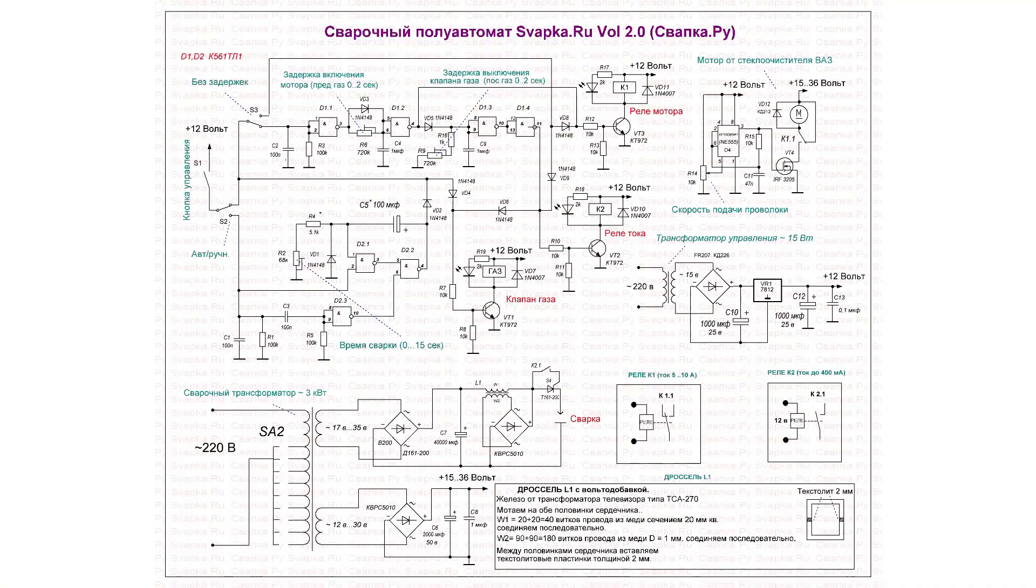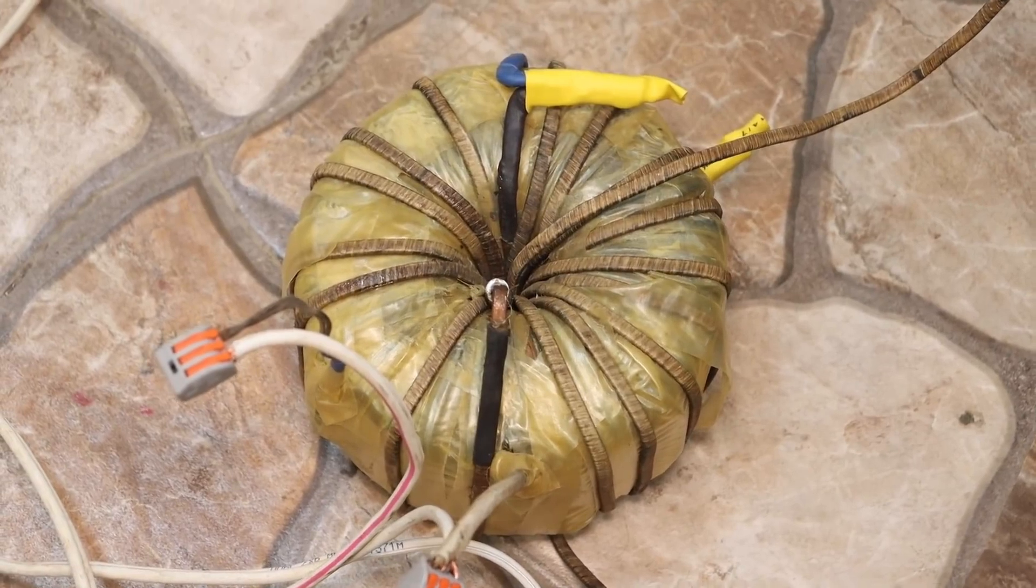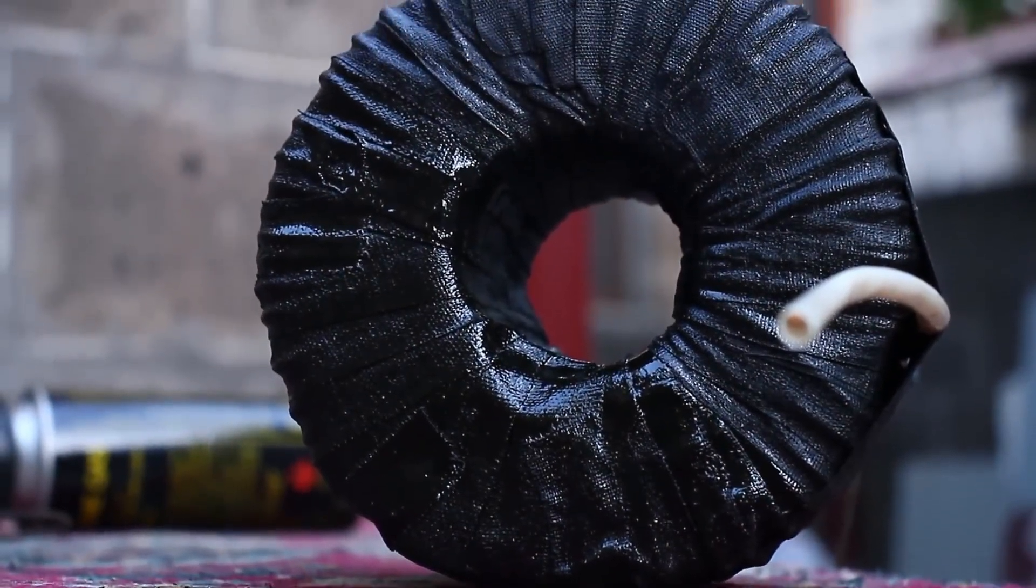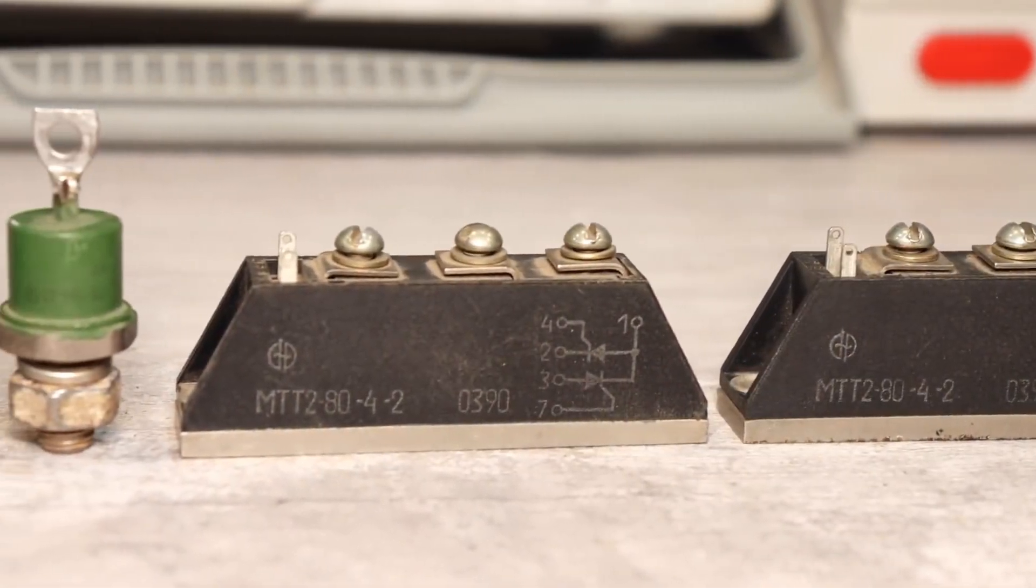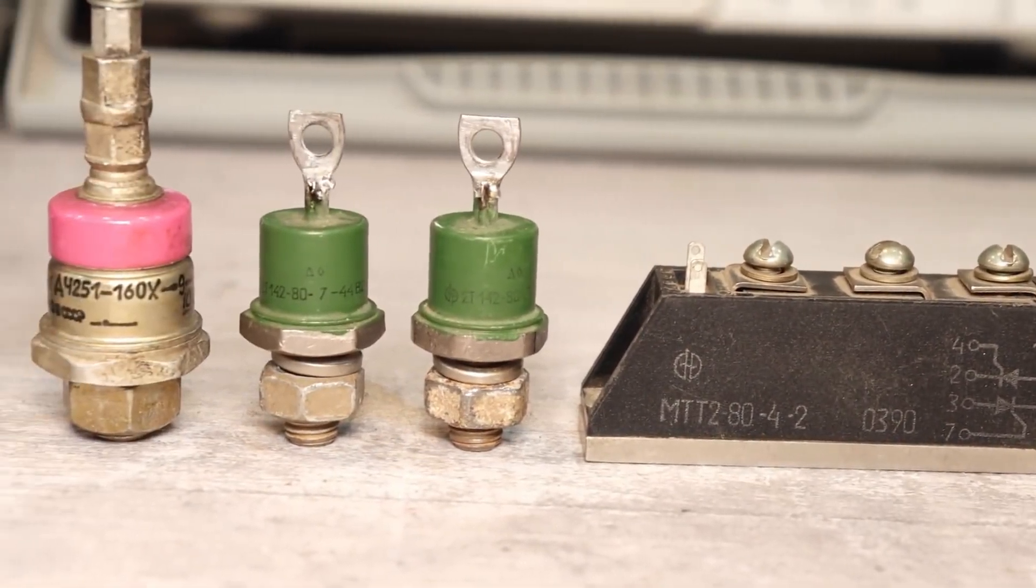The current in this semi-automatic machine is regulated by switching the taps of the transformer's primary winding. In my case, there are no taps and there couldn't be any. I barely fit the main winding here, and there clearly wouldn't be enough space for taps. Therefore, my regulation will be electronic, based on thyristors. But that's another story.